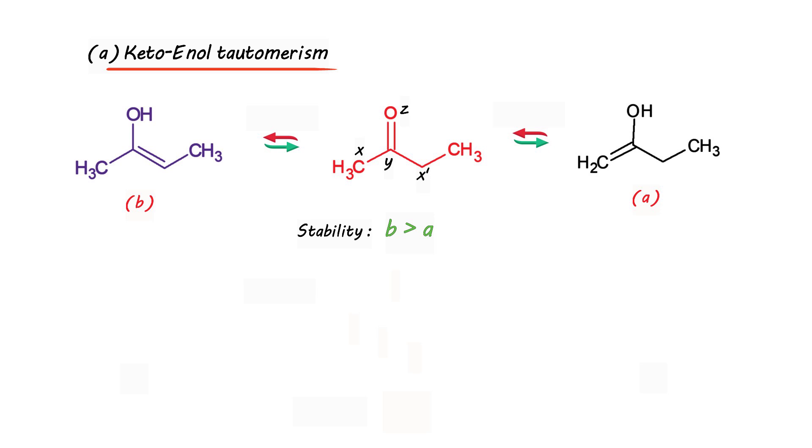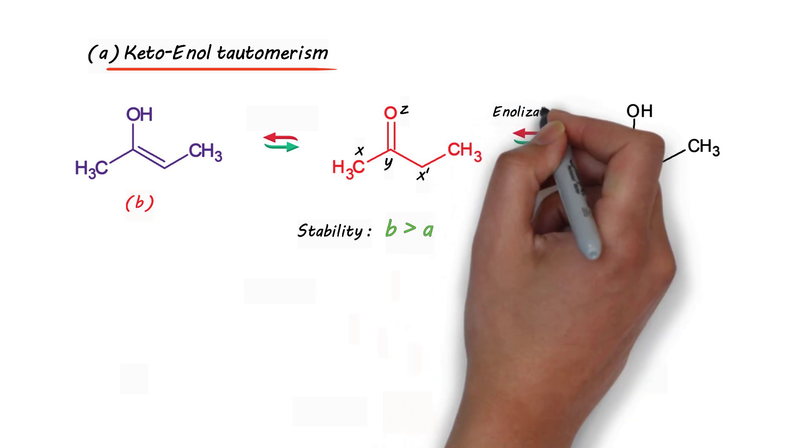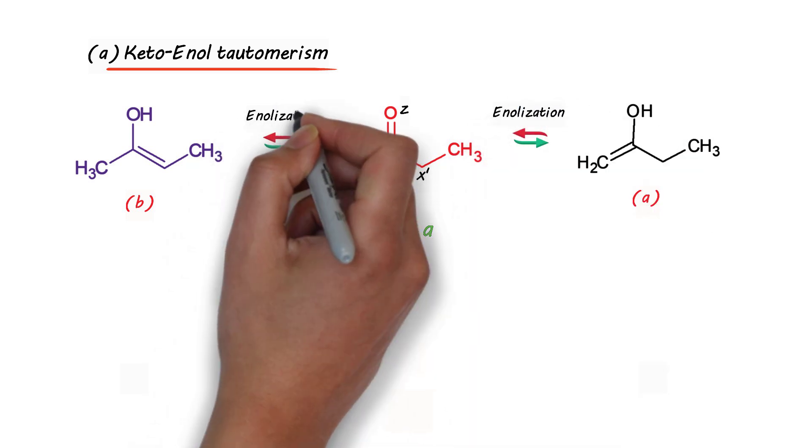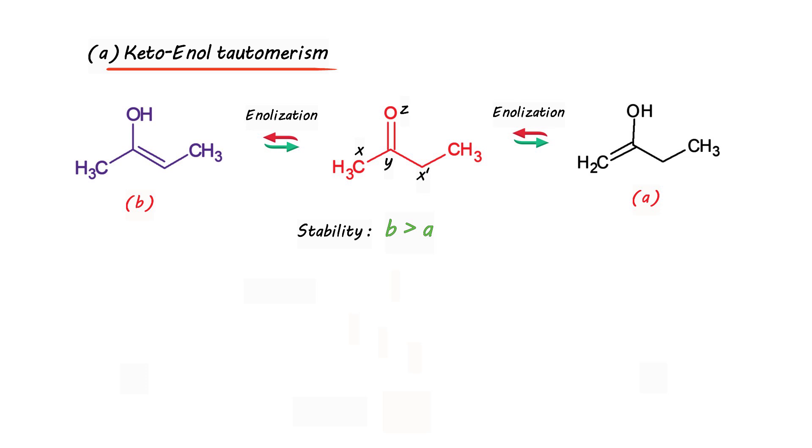Point to be noted is the conversion of keto form into enol form (A or B) is called enolization. Faster the enolization, more stable is the product, or conversely we can say more stable the enol product is, faster will be the enolization. So as B is more stable than A, clearly the enolization with respect to B is faster compared to that of A.